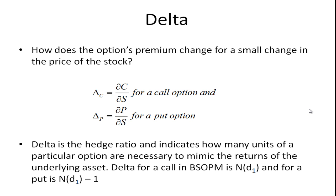And it turns out that delta is the hedge ratio, which we discussed in a couple of other videos, particularly the binomial option pricing formula. It indicates how many units of a particular option are necessary to mimic the returns of the underlying asset. This is important because we're able to create a risk-free portfolio, and if the portfolio is risk-free, then it ought to return the risk-free rate. And that's essentially how options are priced.